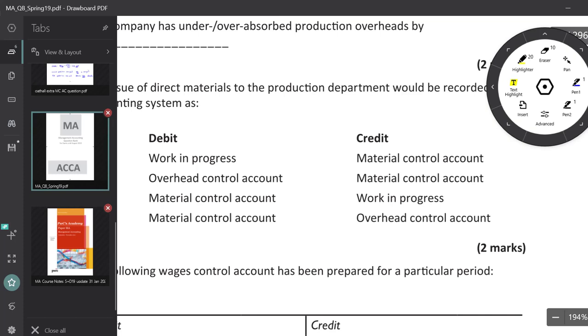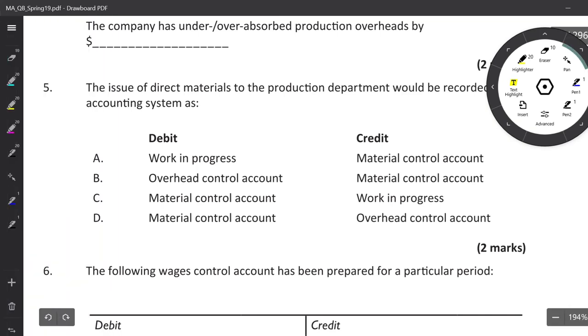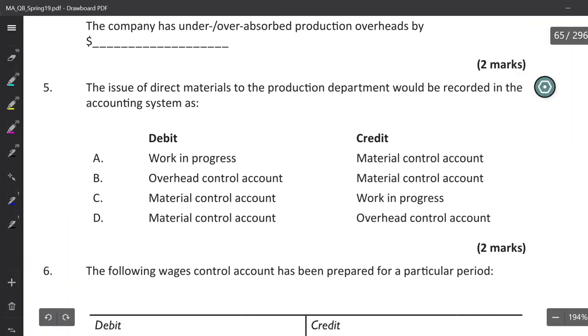So if we look at a question here, the issue of direct materials to the production department. So that would be out of materials direct. That means it's going into WIP, isn't it?